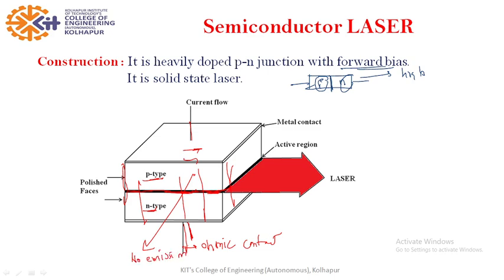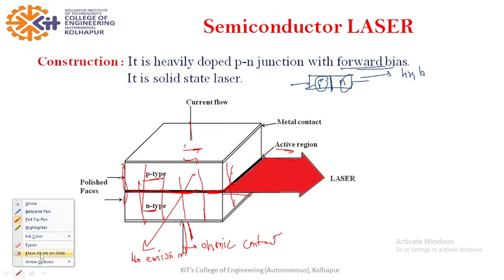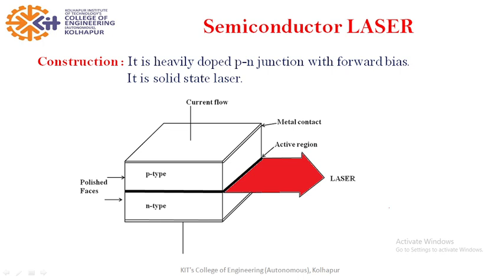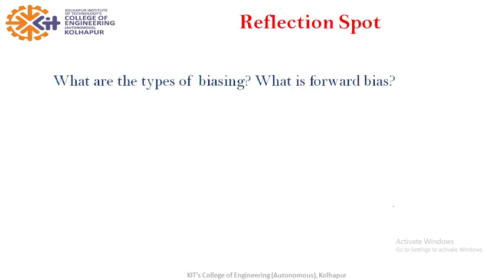This is the construction. The junction is in the horizontal plane. Top and bottom surfaces are metallized to give ohmic contact. Front and back faces are polished, and the remaining two faces are rough. The laser comes out through the junction region, so we call it the active region. The size of this semiconductor laser is very small — less than 1 millimeter.